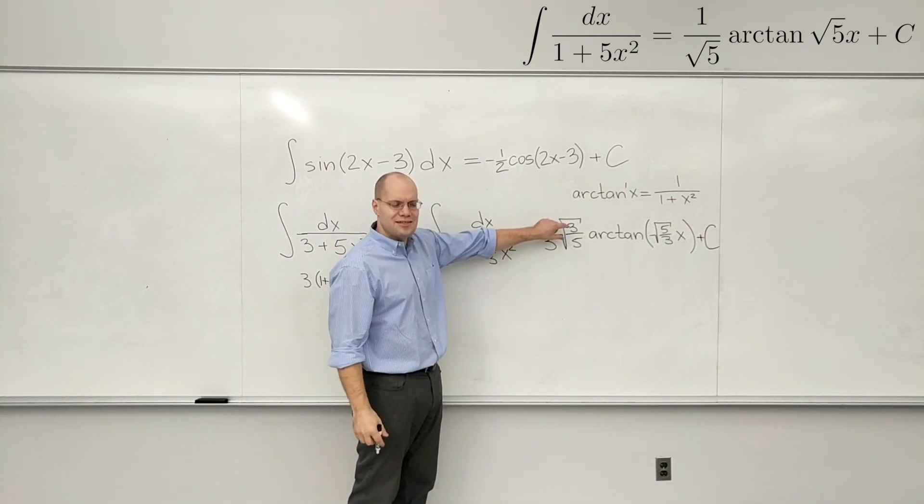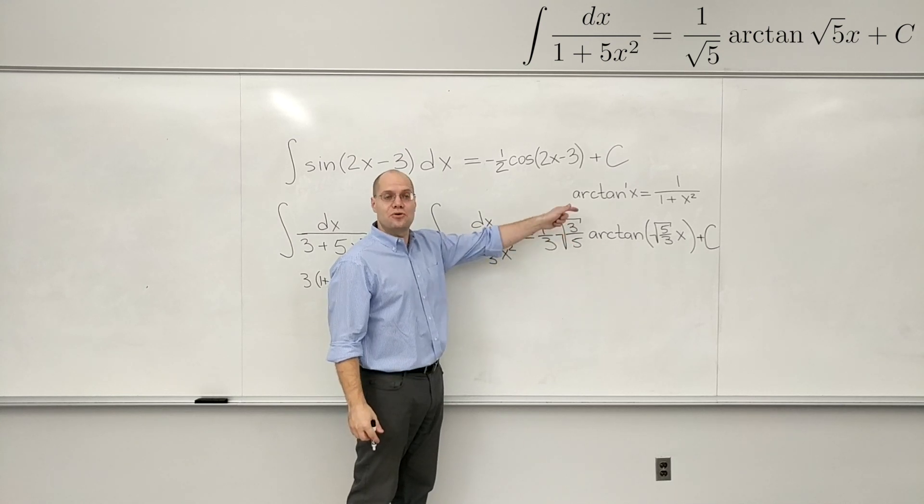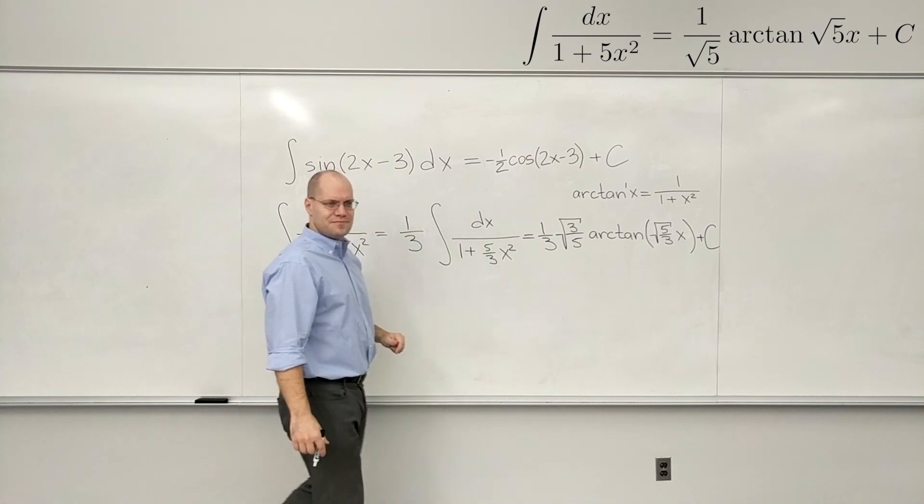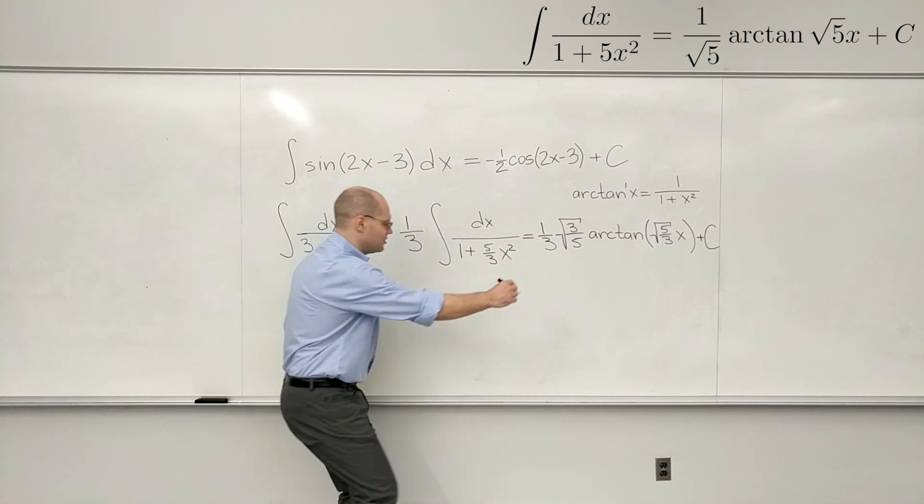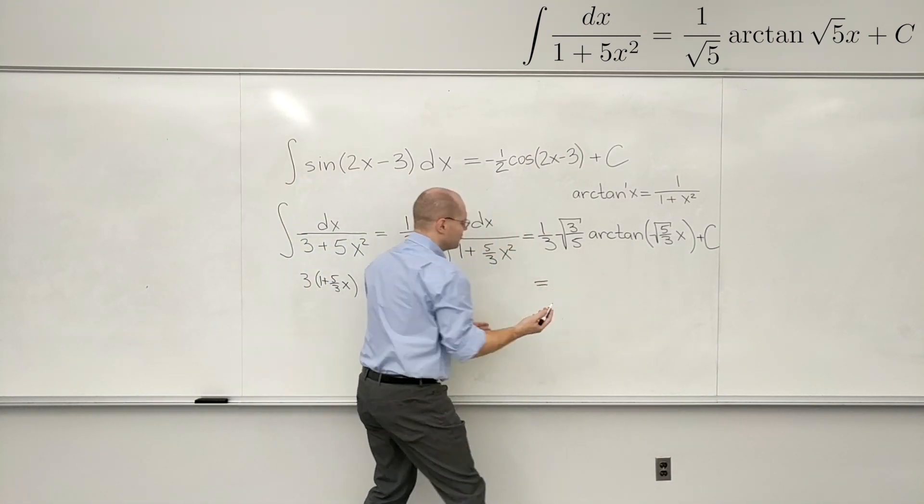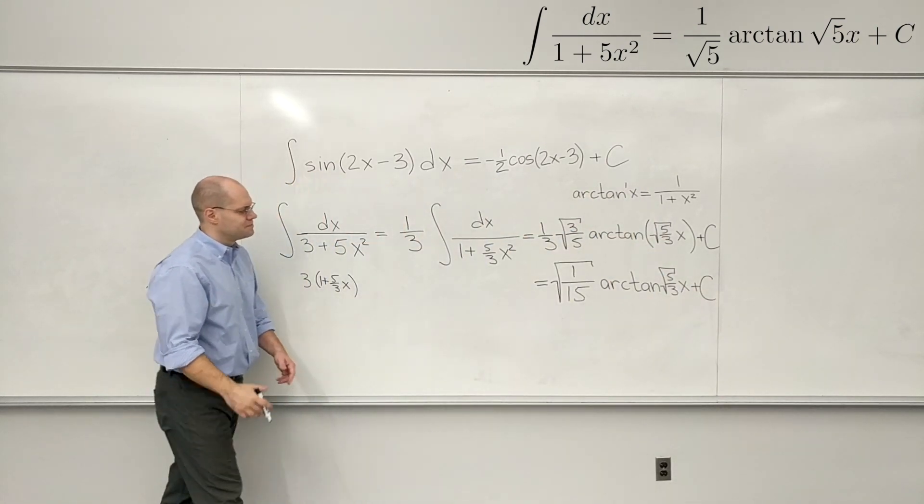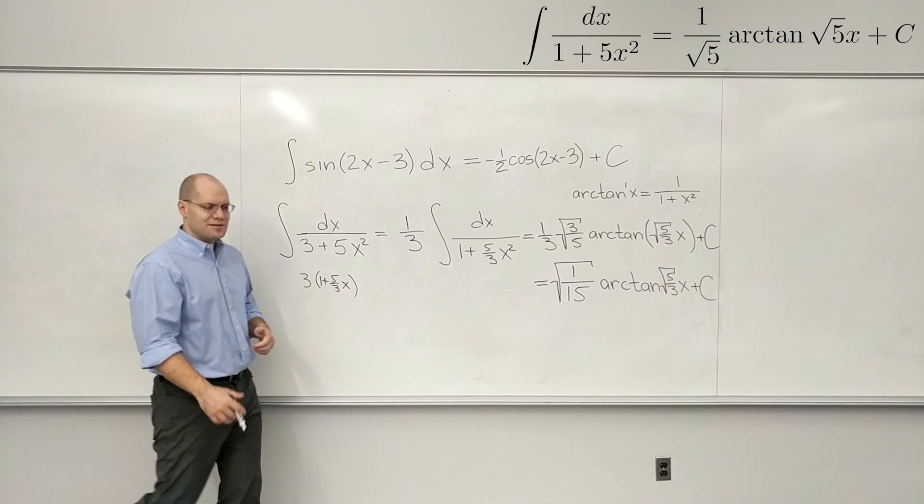And you realize that this square root of 3 fifths is the makeup from the square root of 5 thirds. And you can't leave it like this. Now I wish I had to prevent this.